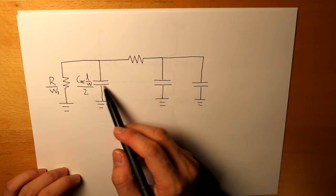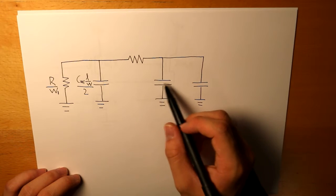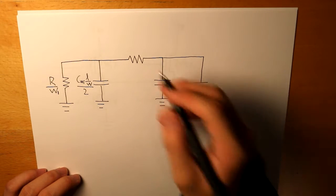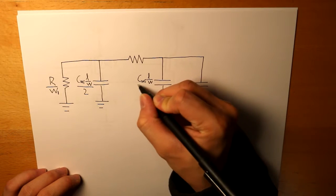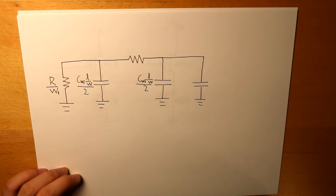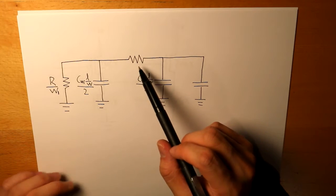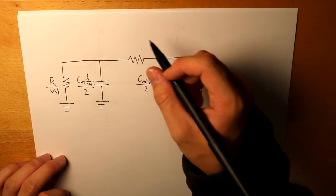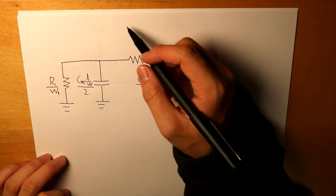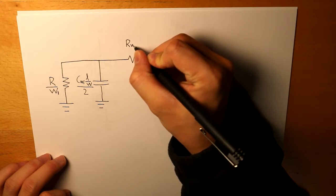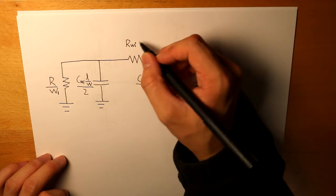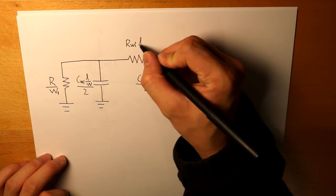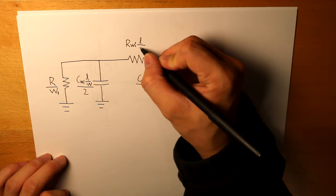This capacitance here also has the same equation. Then for this resistor we have the resistance for that wire, which is R_WI, and we simply take the ratio of the length of the wire divided by the width of the wire.